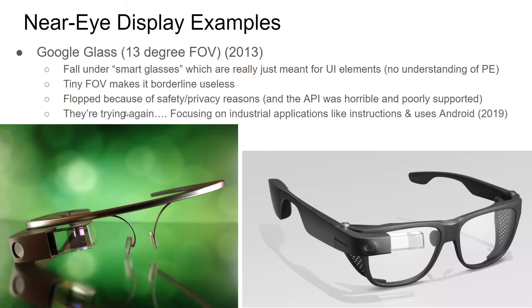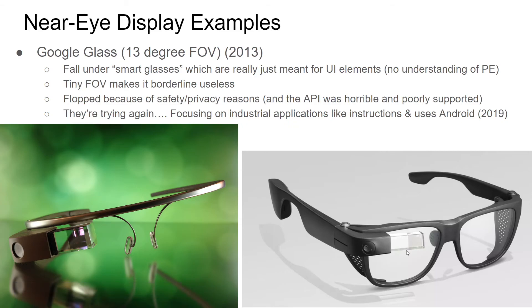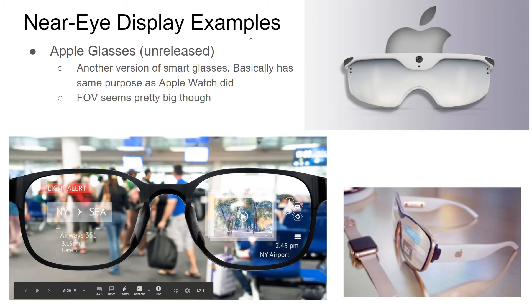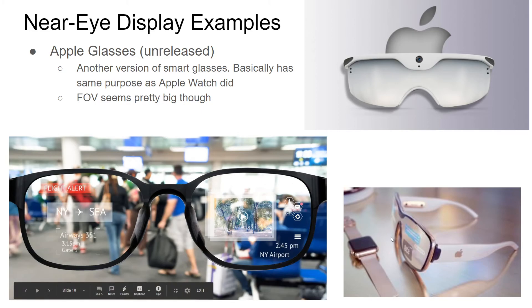From a developer standpoint the Google Glass API was terrible and poorly supported. They tried again in 2019 with a version focused on industrial applications, now using Android instead of a proprietary OS. Industrial applications like showing instructions and process steps could be a good use case. Apple Glasses have also been announced — not released yet — aiming to do what the Apple Watch did by extending phone functionality to a wearable, with a reportedly large FOV.